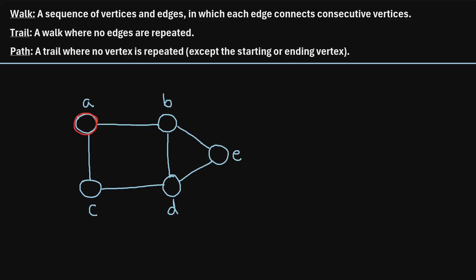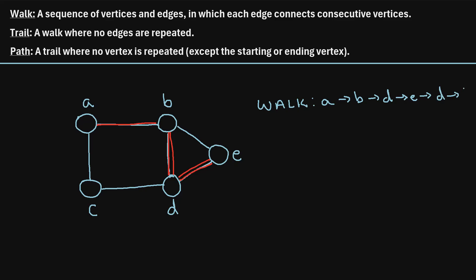Let's say we start at vertex A, and we move to vertex B, then we move to vertex D, then to E, and then maybe we go back to D, and then back to B. That would be an example of a walk. Here's how we can write it: we started at vertex A, then we went to B, then D, then to E, then back to D, and then we ended at B.